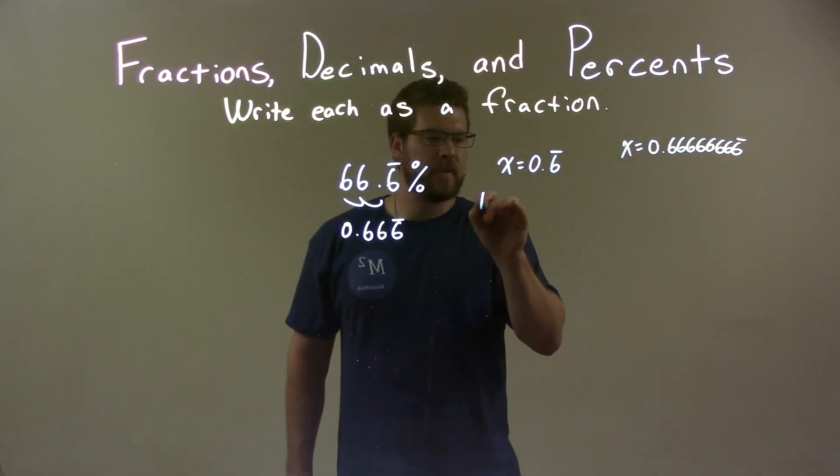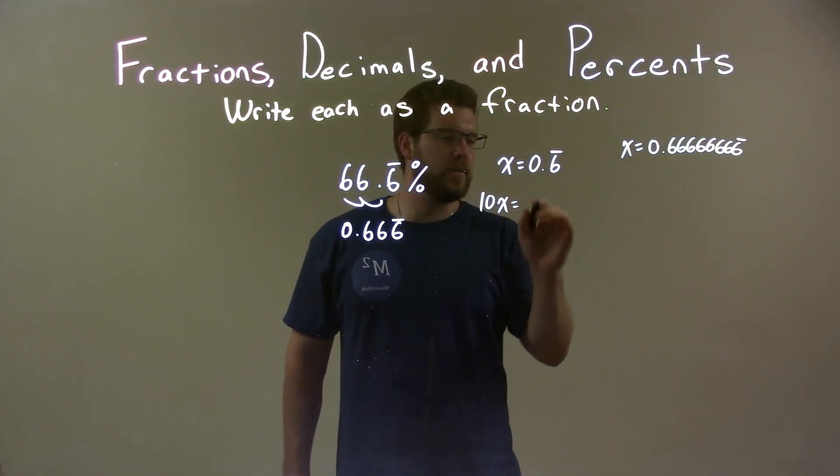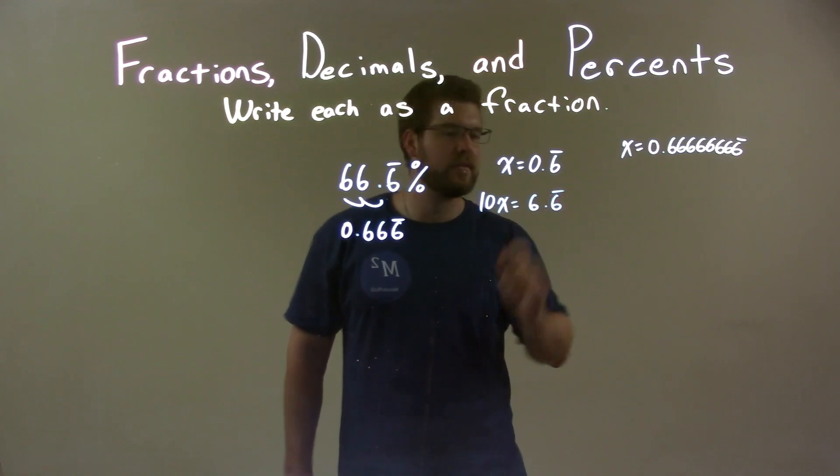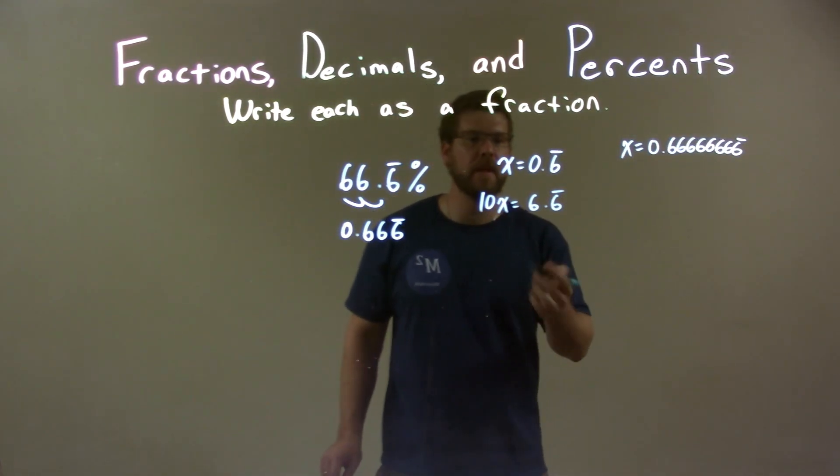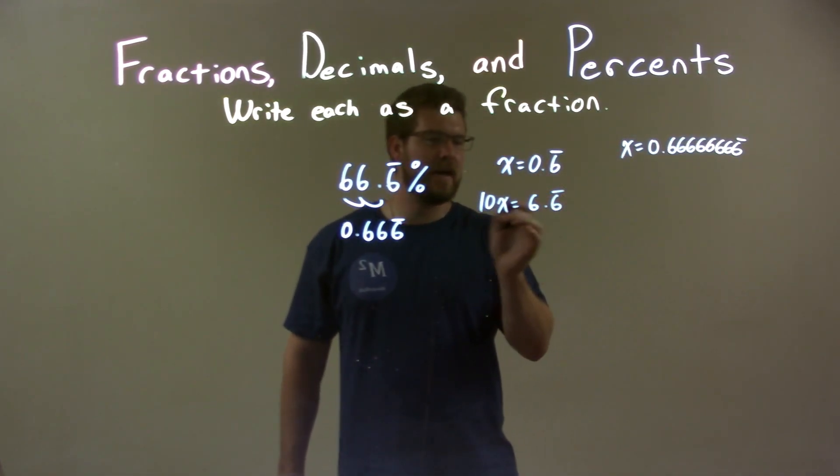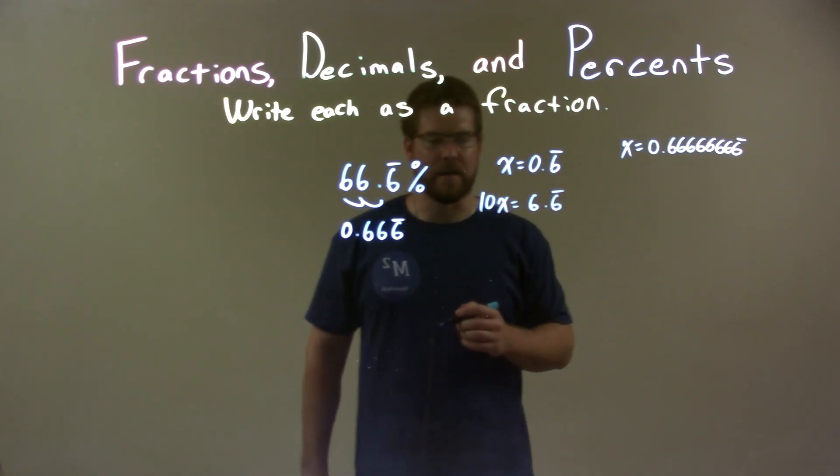Then I'm going to multiply this by 10. So I have 10x equals 6.6 repeating forever. Move the decimal place one spot over. If x is 0.6 repeating, 10x is 6.6 repeating.